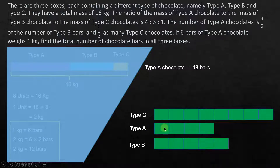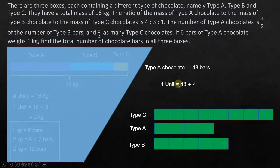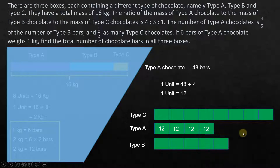Now we know that type A is 4 units, type C is 8 units, and type B is 5 units — all divided into equal-sized units. Type A's 4 units equals 48 bars, so one unit equals 48 ÷ 4 = 12 bars. Each of these small units represents 12 chocolate bars, so every box segment here represents 12 chocolate bars.